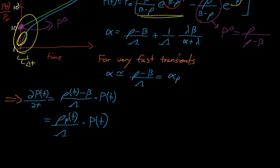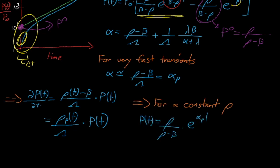Given this constant reactivity insertion, our system's power is given by the prompt term in the solution to the in-hour equation. Our new adjusted p0 is equal to rho divided by rho minus beta, and P of t is equal to rho divided by rho minus beta times e to the alpha prompt times t. This concludes our discussion of the approximations to the point kinetics equations. In the next and final kinetics lecture, we'll begin introducing temperature feedback during a kinetics transient, and thus begin our journey into the realm of reactor dynamics.